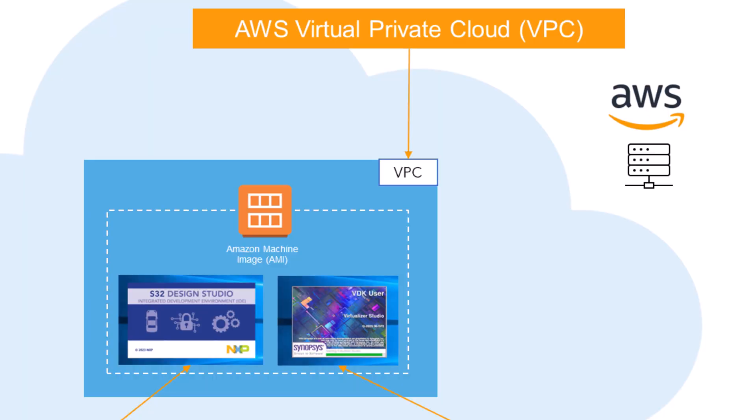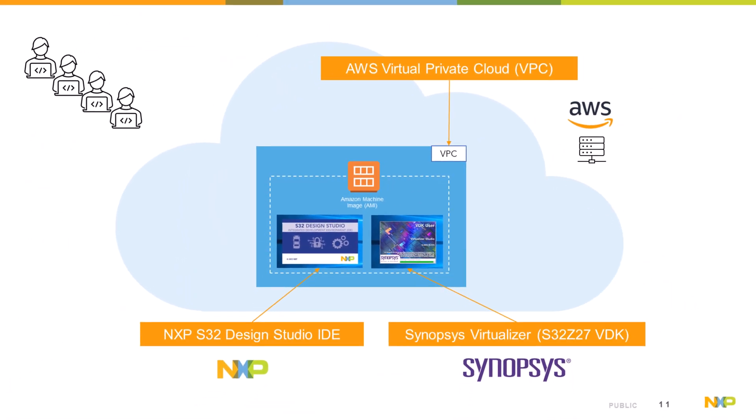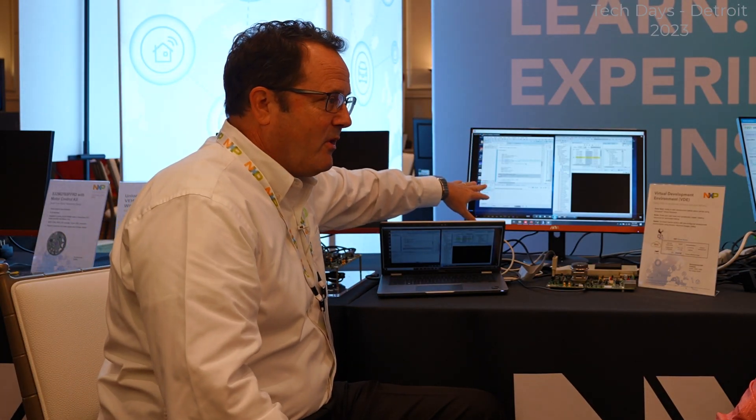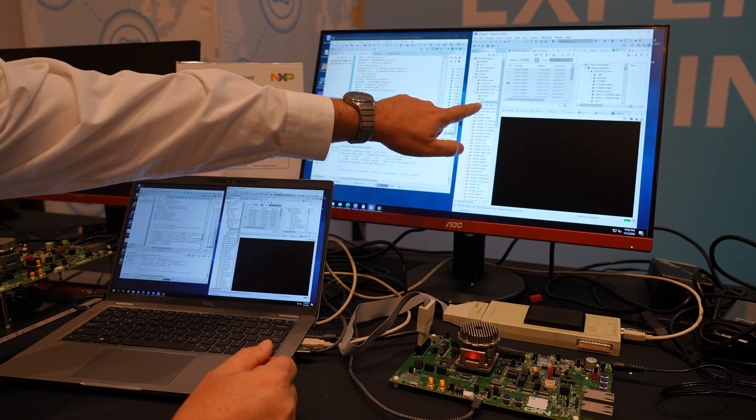Let me first describe the perspective that we see here. This is an Amazon machine image — it's a virtual machine and it lives in the Amazon cloud. This particular instance is being hosted out of Ireland. So when we ran this demo, we are actually talking to the data center in Ireland. We have the NXP S32 Design Studio on the left — that's our feature-rich IDE where we have our code and our build process. And then on the right we have the Synopsys Virtualizer, which is our digital twin — a copy of the S32Z27 SOC. It's a software copy of the chip, so my software thinks it's running on the real chip.